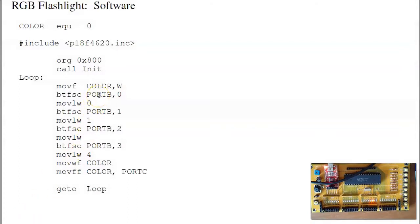A good homework problem is to change this so you have a seven-color flashlight. If you mix colors — red plus green makes yellow, red plus blue makes magenta, green plus blue makes teal — you can get different colors. Mix red plus green plus blue all together and you get white. Conceivably you could have seven different colors plus off. Another option is a flashlight where brightness varies — one LED turns on, two LEDs, three, four — as more LEDs turn on you get a brighter flashlight.